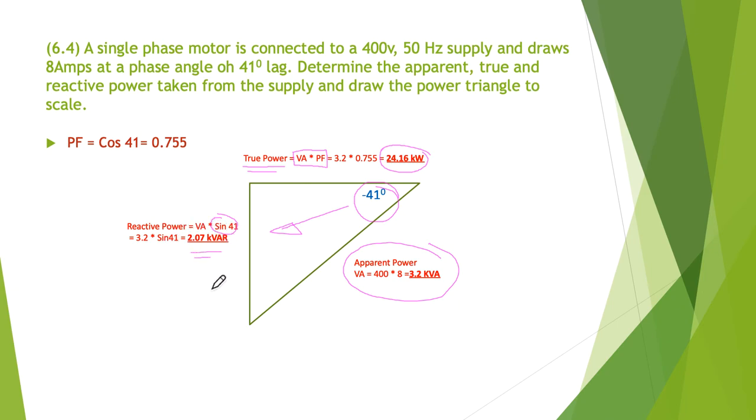Now of course we could have used Pythagoras. Once we had the apparent power and worked out the true power, we could have used Pythagoras if you want to check your calculations. You can actually work out whether the 2.07 squared plus 2.416 squared should equal 3.2. And I've just done the calc on my calculator and yes it does. So that's a way you can go about checking yourself.